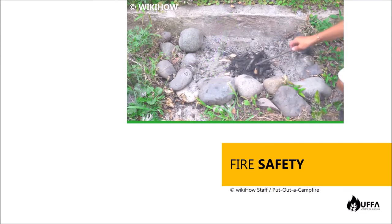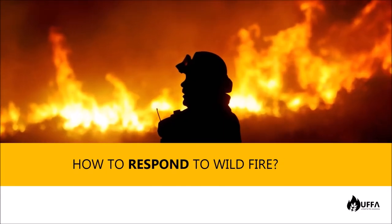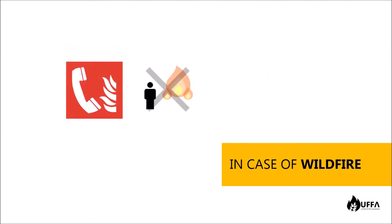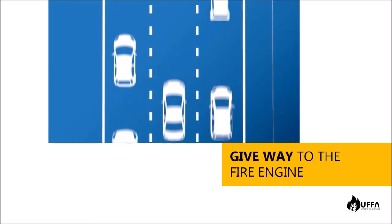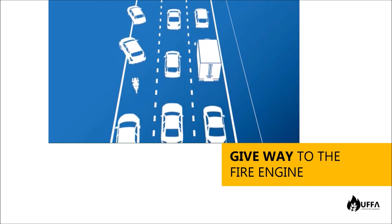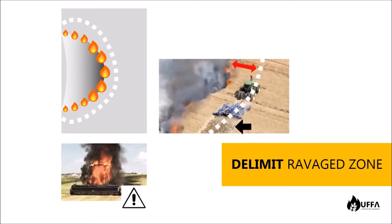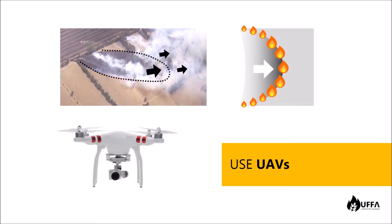Use multiple ways to extinguish fire completely. In case of wildfire, call the fire department and never try to extinguish a big fire alone. Check if somebody needs help and evacuate the area with your family. Give way to emergency vehicles — pull your car over and stop as soon as you see their lights or hear sirens, and make sure all emergency vehicles are gone before driving again. One fundamental procedure is delimiting the ravaged zone, though using agricultural machinery like a combine harvester can be seriously life-threatening. Use UAVs to observe and control the fire zone from above for better emergency management.